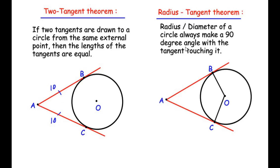The second circle theorem we will use is the radius tangent theorem. It states that the radius of a circle always makes a 90 degree angle with the tangent touching it. Here, OB and OC are radii, so OB makes a 90 degree angle with AB, and similarly OC makes a 90 degree angle with AC.